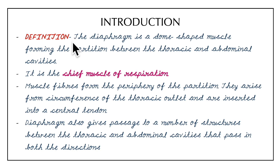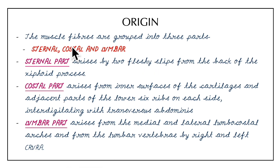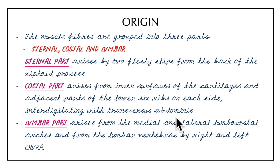To recap: the diaphragm is a dome-shaped muscle forming the partition between the thoracic and abdominal cavities and is the chief muscle of respiration. The sternal part arises by two fleshy slips from the back of the xiphoid process. The costal part arises from the inner surfaces of the cartilages and adjacent parts of the lower six ribs on each side, interdigitating with the transversus abdominis muscle.